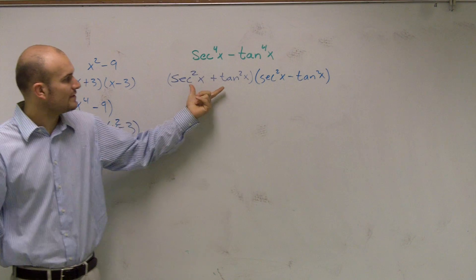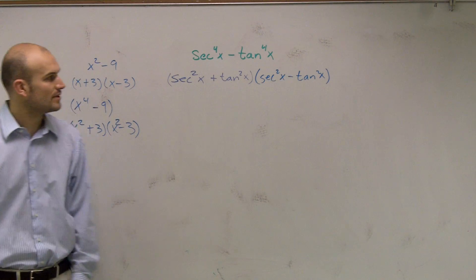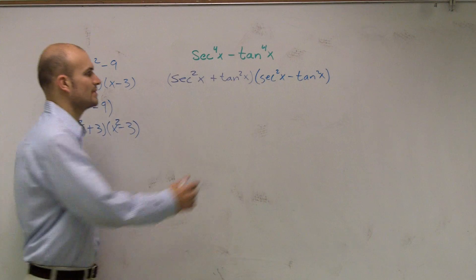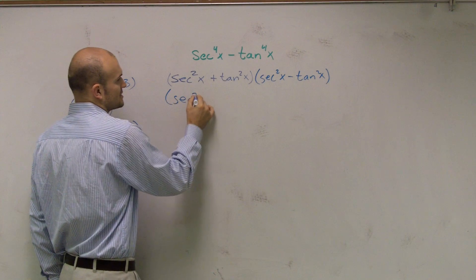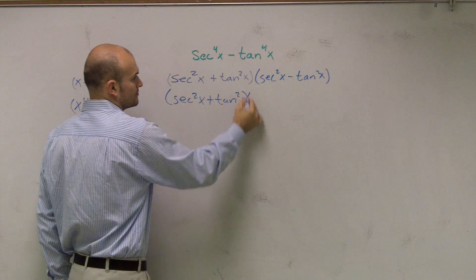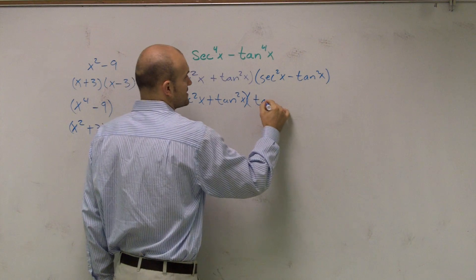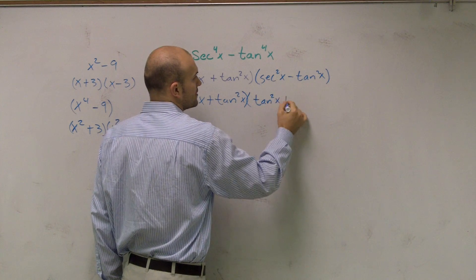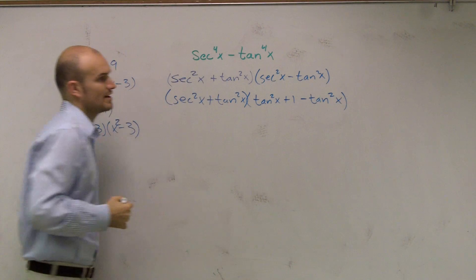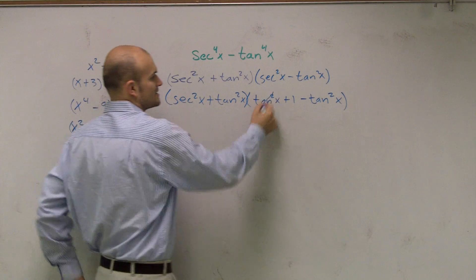So now what I have is I have secant squared plus tan squared, and secant squared minus tan squared. Well, if I transform this, when I get secant squared, I can transform so I get secant squared of x plus tan squared of x. And what I notice is, if I use my Pythagorean identity for secant squared, that's the same thing as tangent squared plus 1 minus tangent squared of x. So therefore, what you'll notice is, you'll see that these two now cancel out.